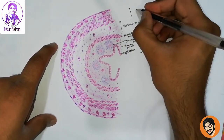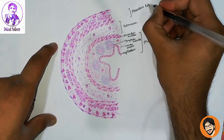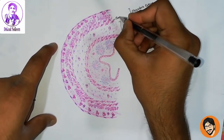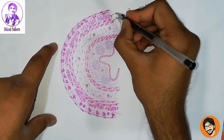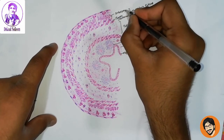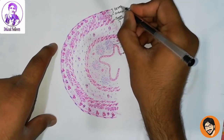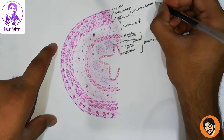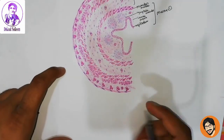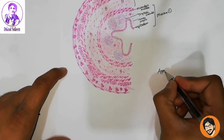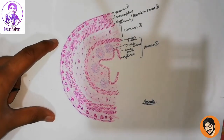The next layer is muscularis externa, made of circular muscles and outer longitudinal muscles. So, one, two, three, and four — the distinct layers of the appendix. We are done with the appendix. Thank you all for making it easy.